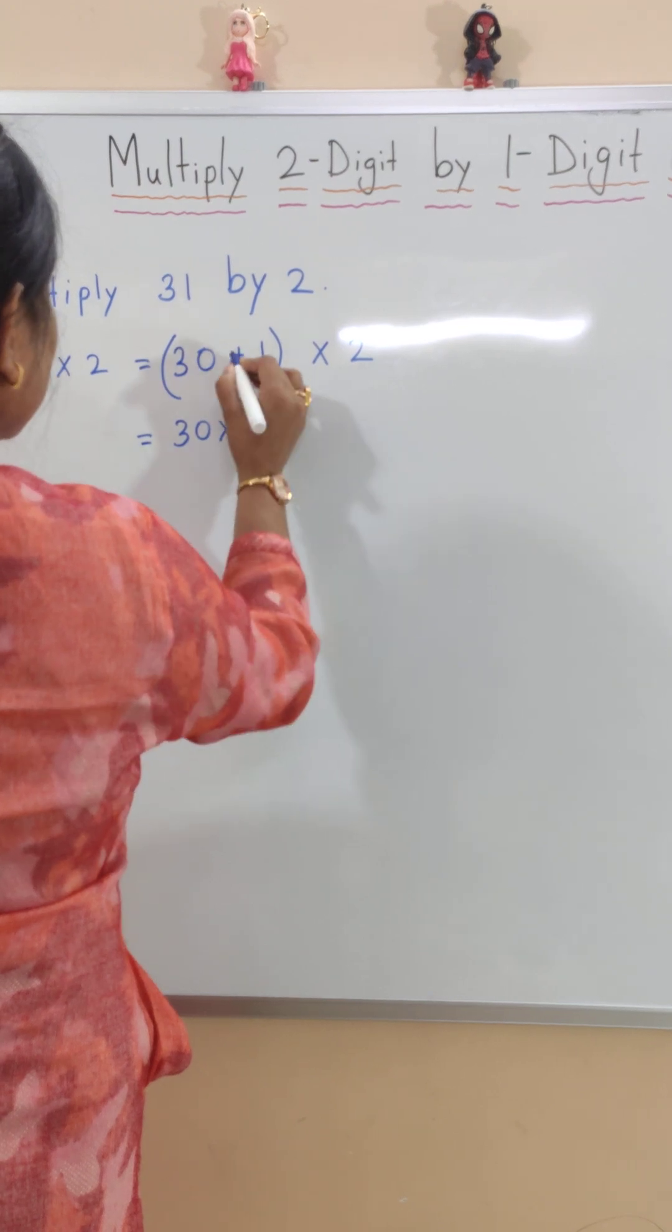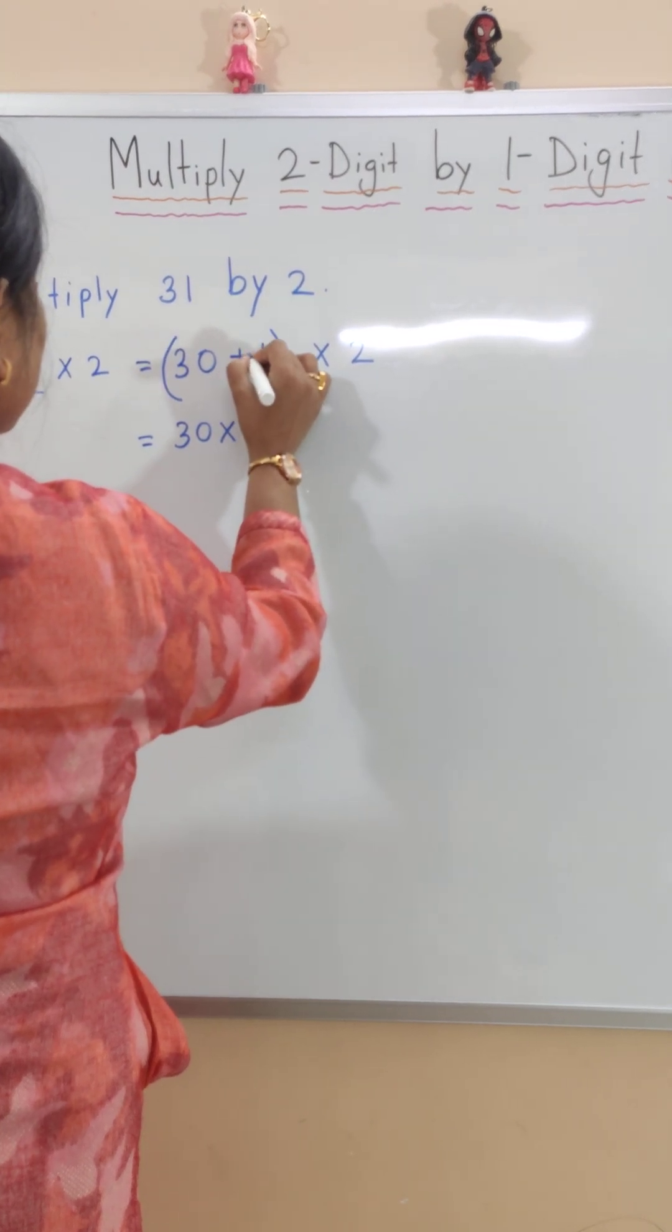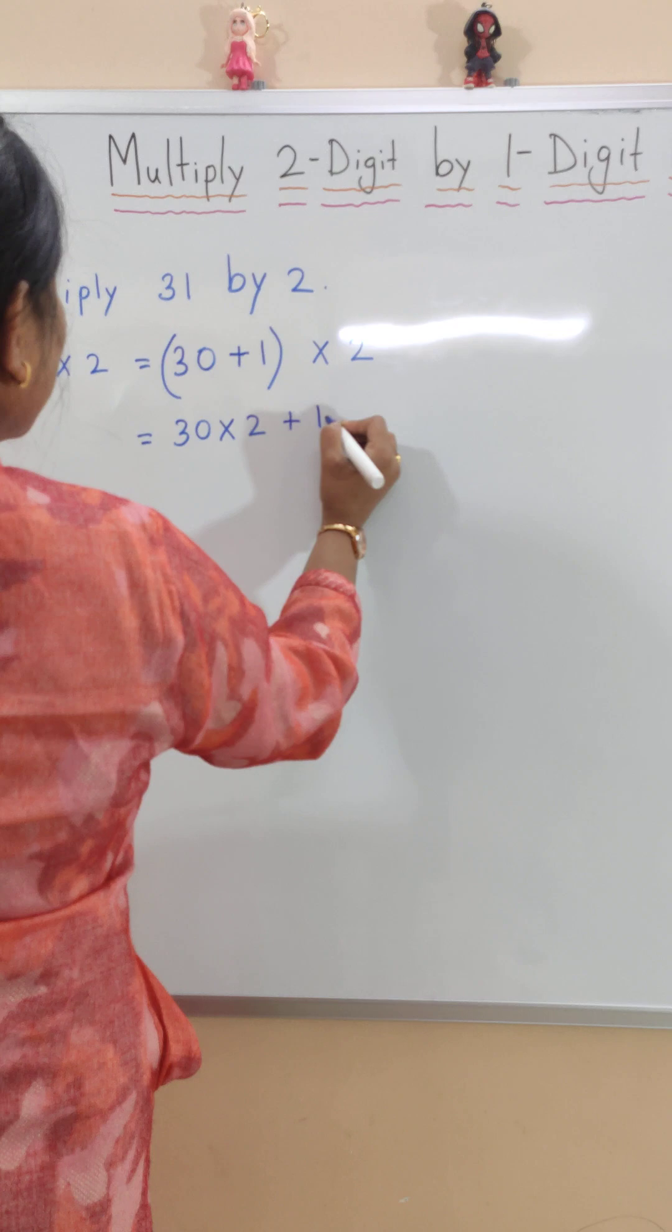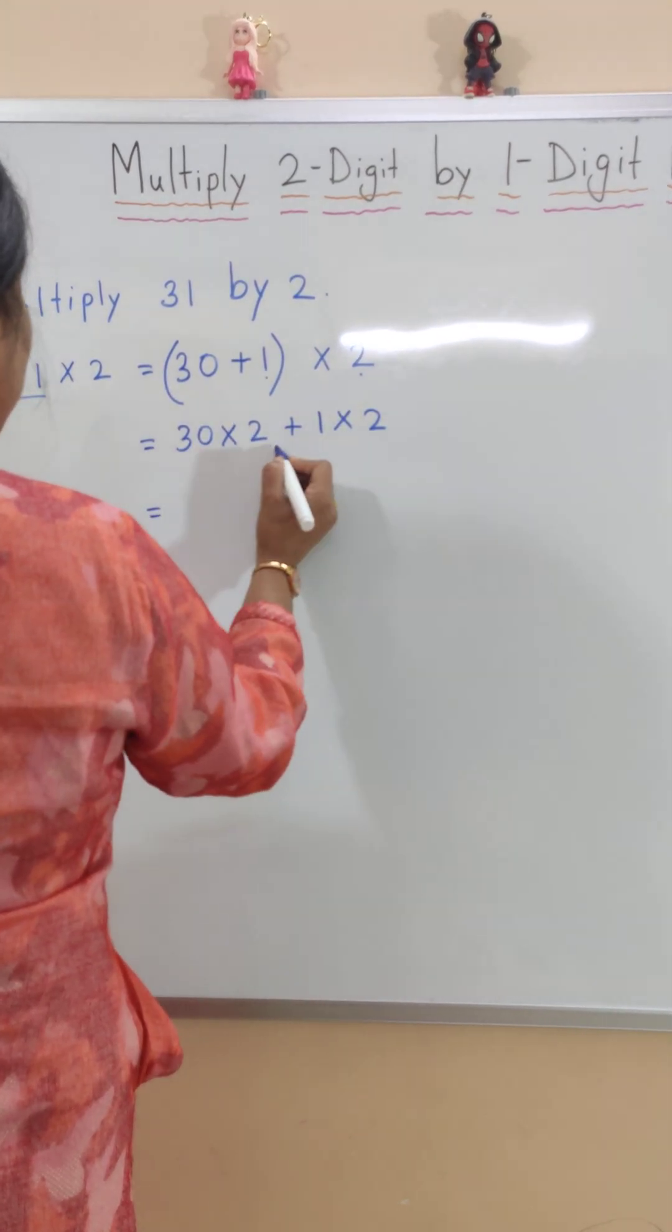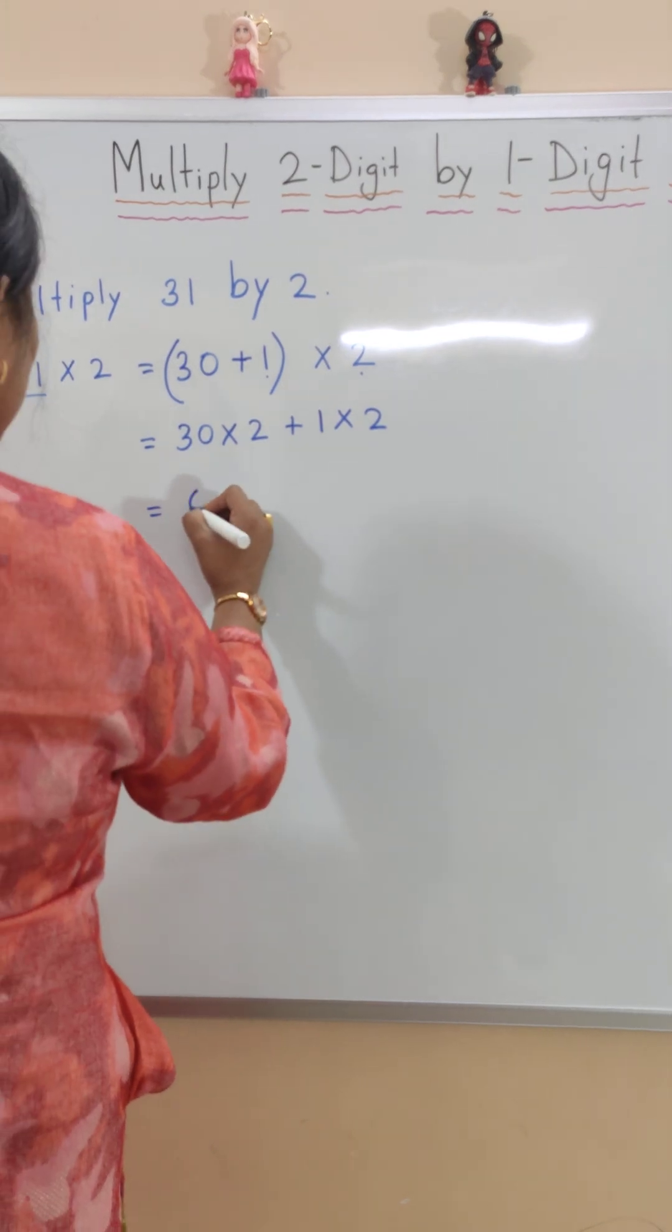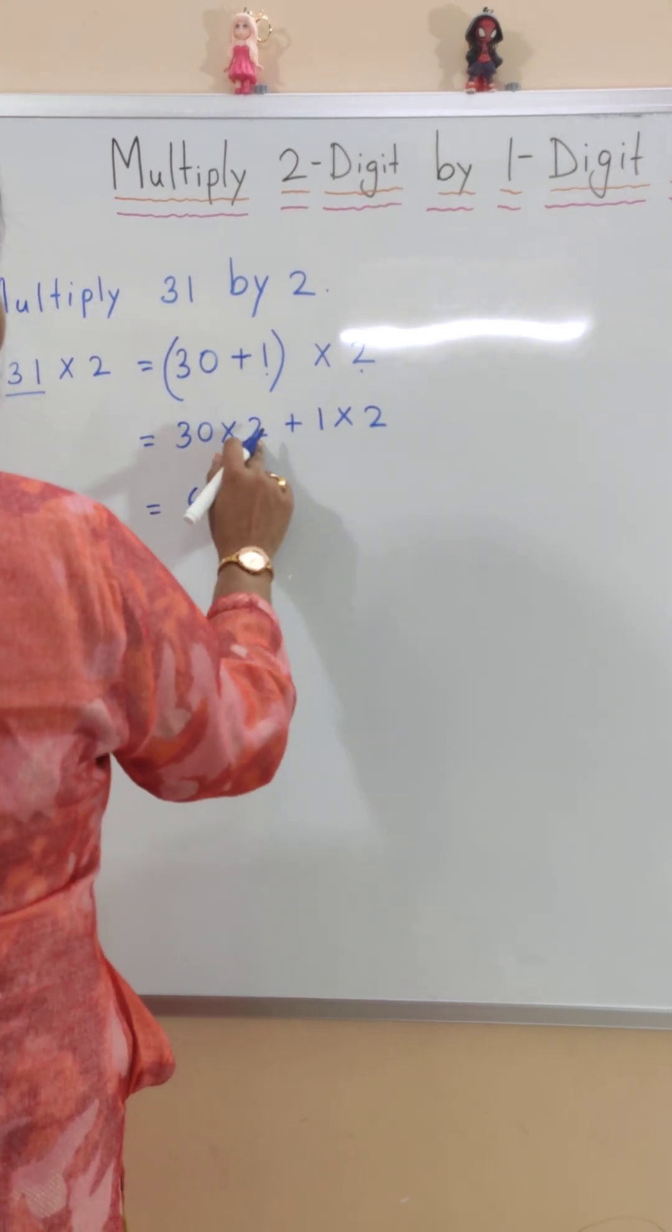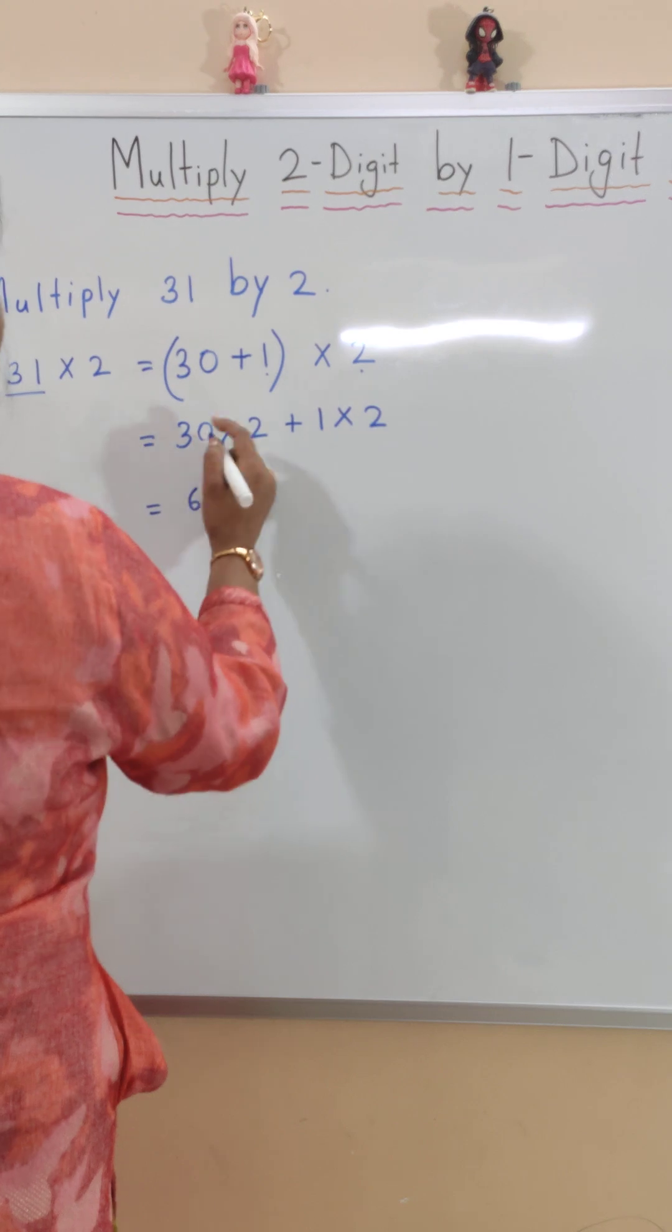Then plus. Then 1 times 2. Now 30 times 2 equals 60. We know 3 twos are 6 and 0 came down.